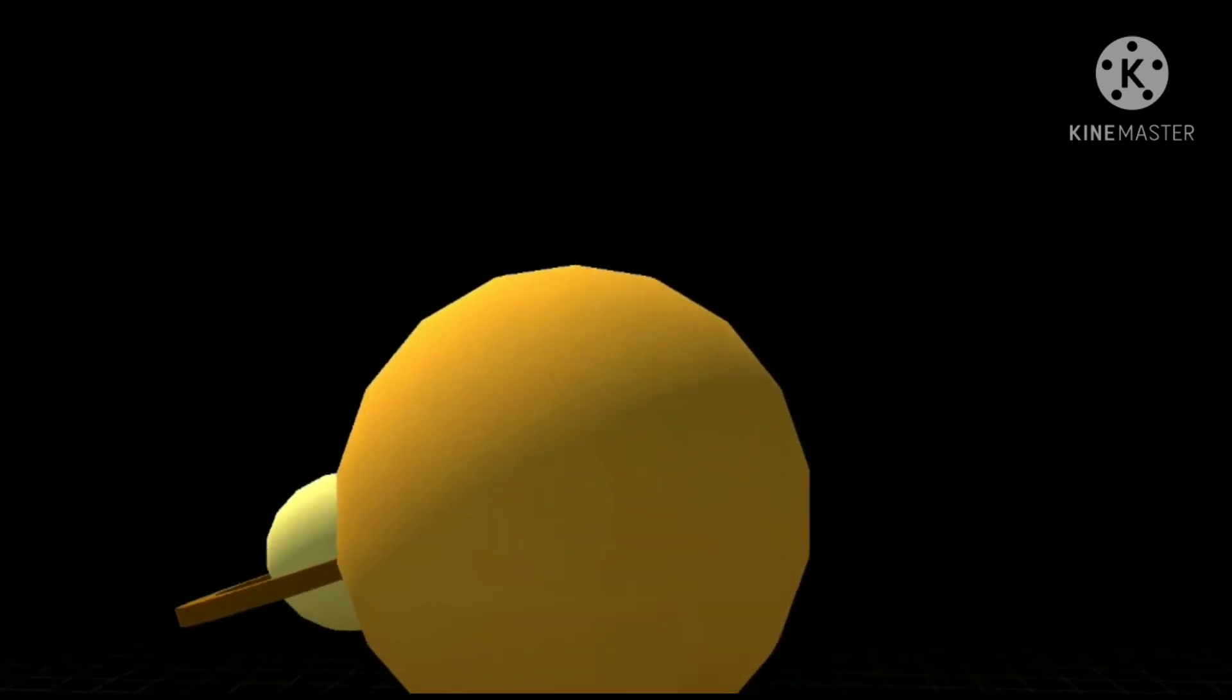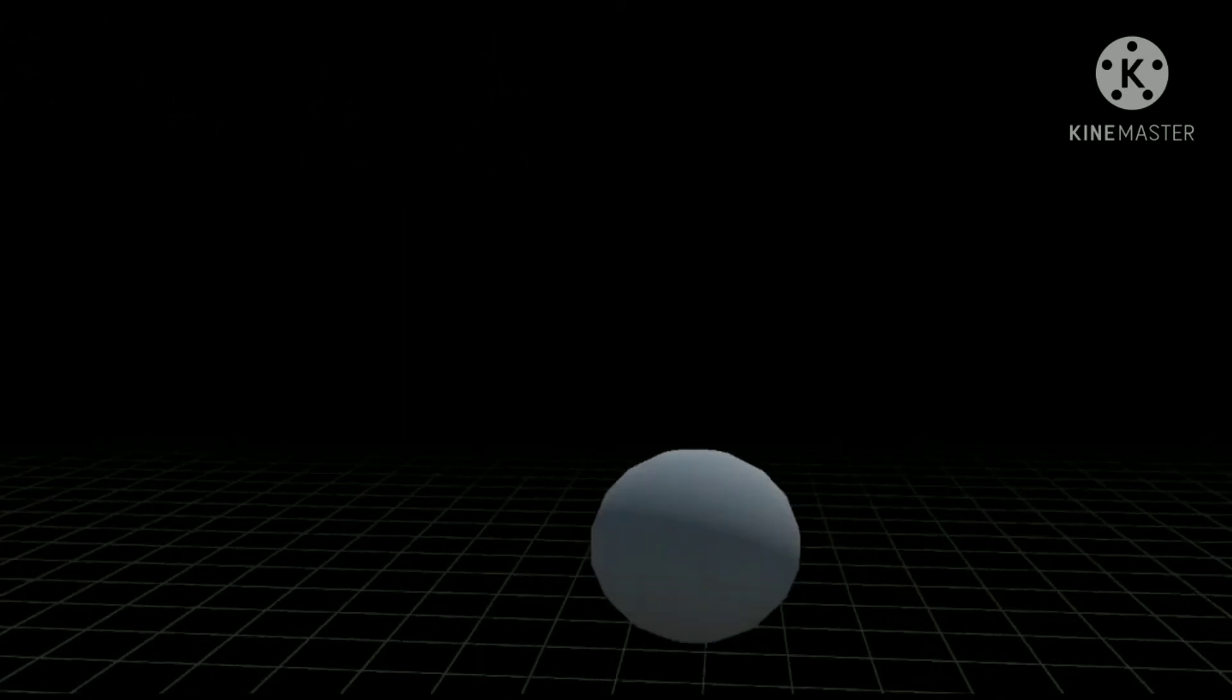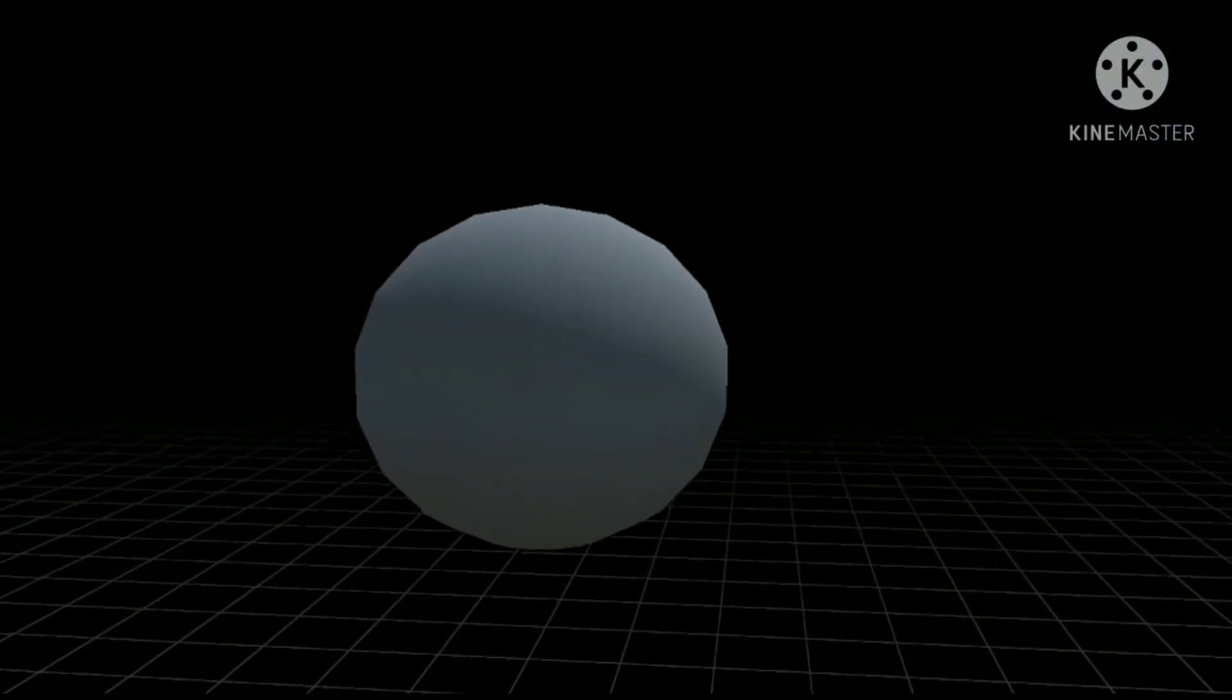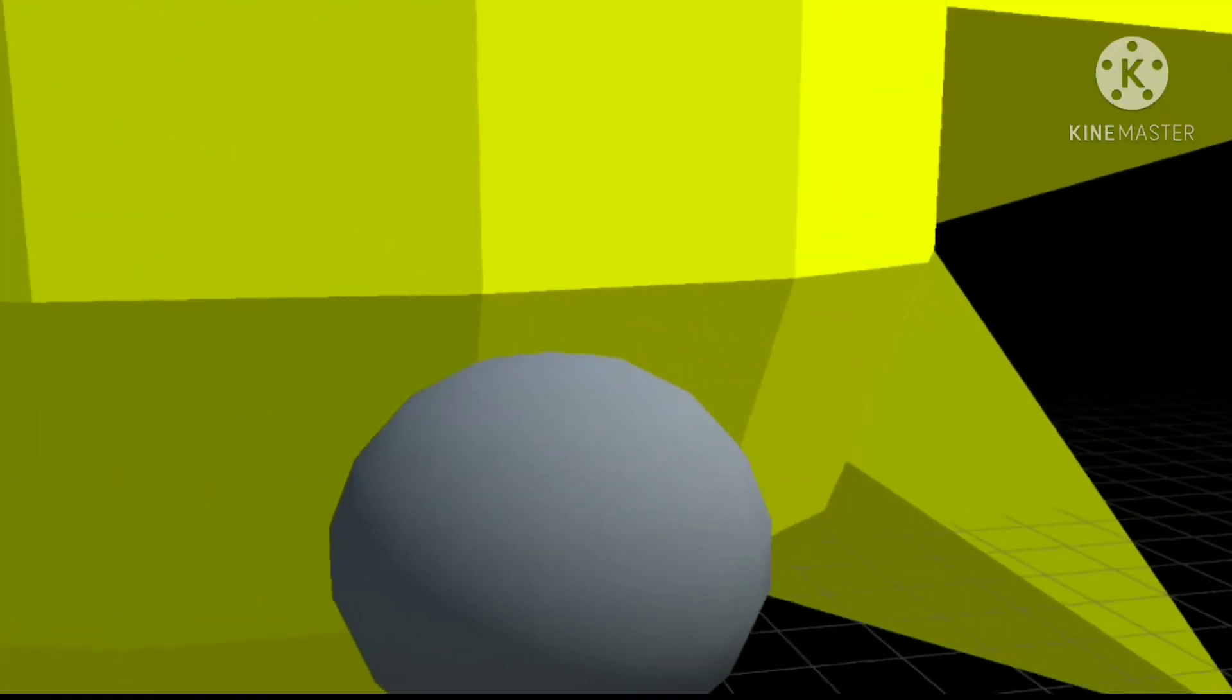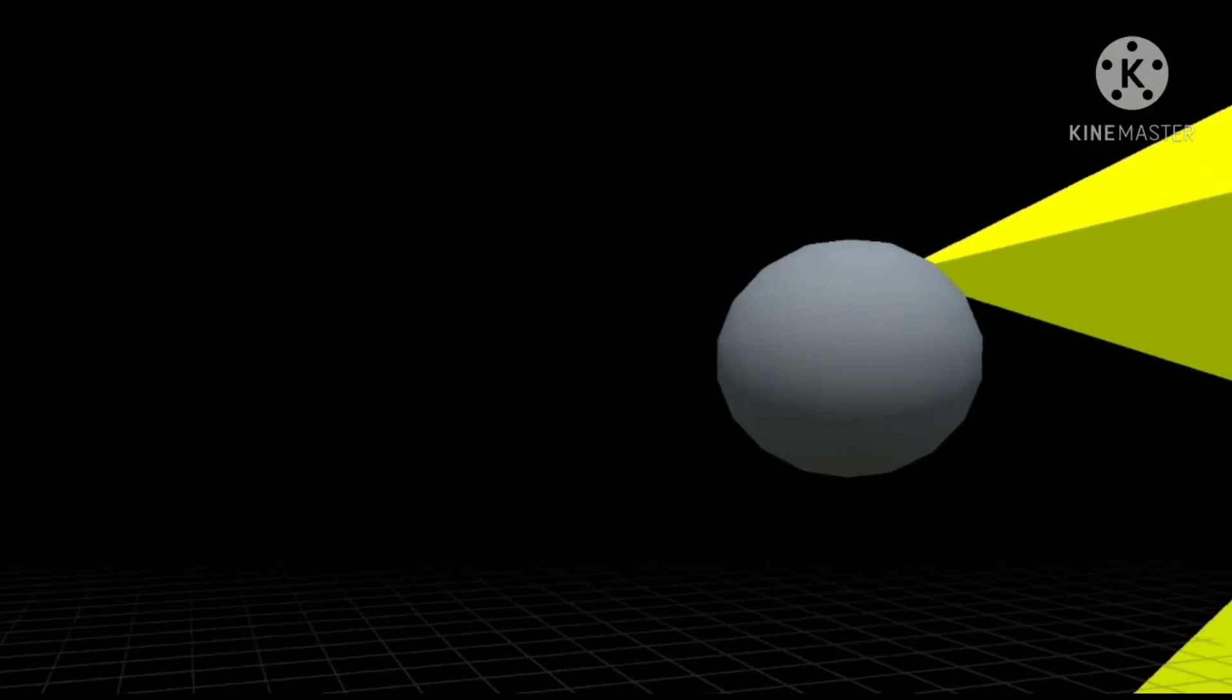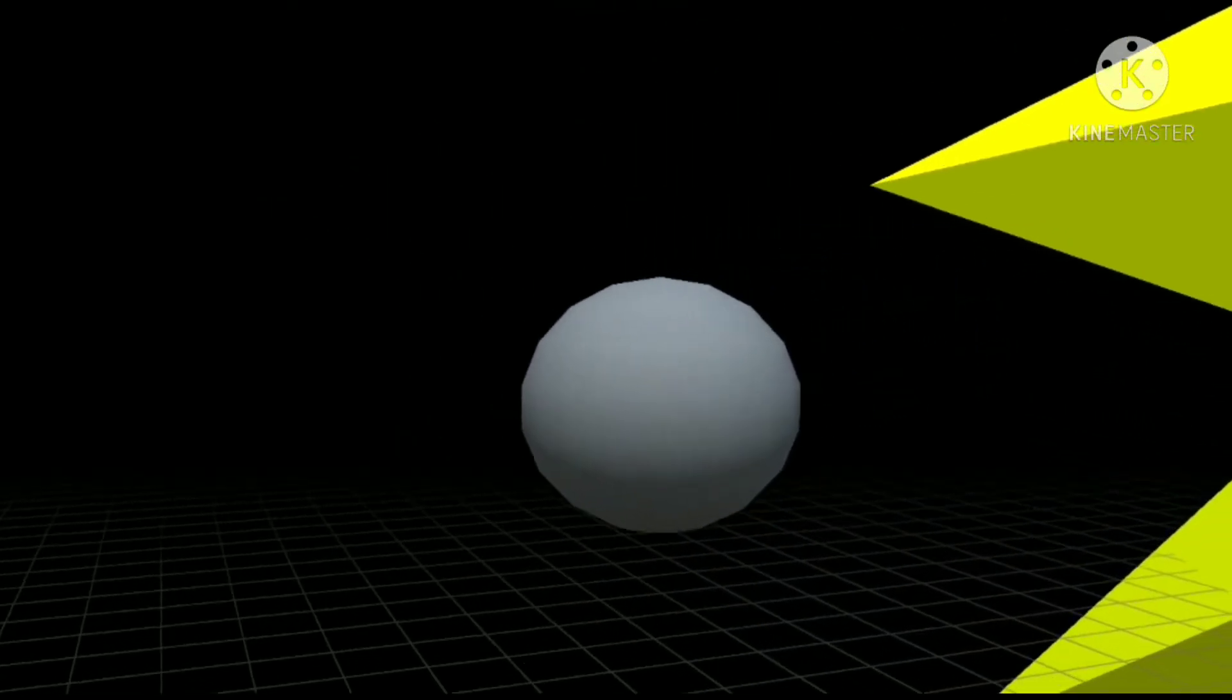Next up is Mercury, the closest planet to the sun. The half that's closest to the sun is very hot. However, the half that's not close to the sun is very cold. It looks kind of like the moon.